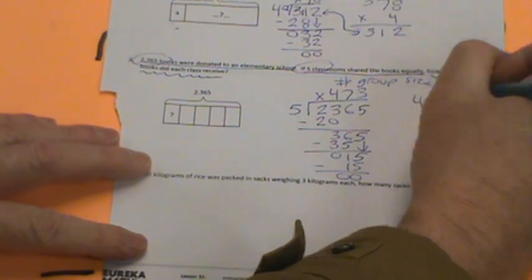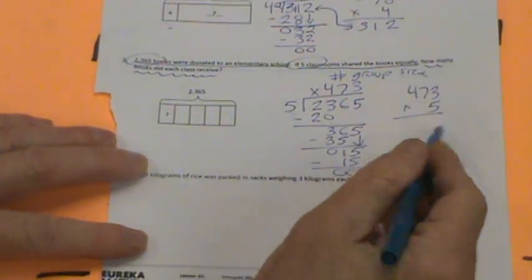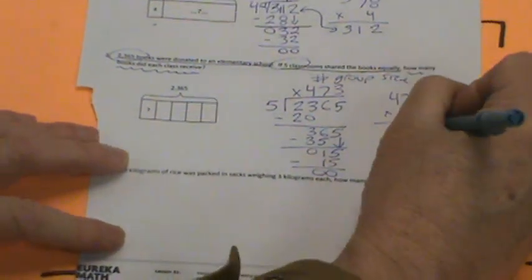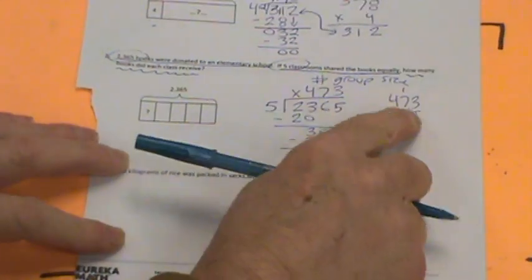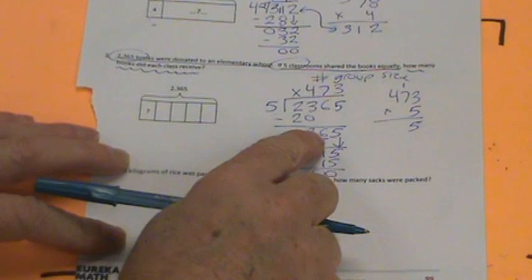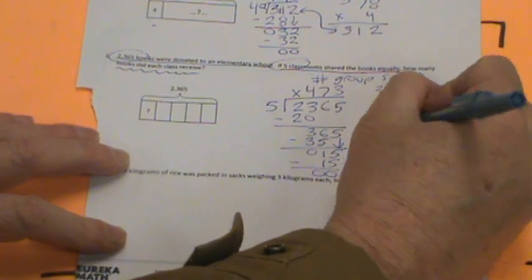Let's check this. We'll do 473 times 5 to check. Look at the magic. 3 times 5, 15. 7 times 5, 35 plus 1 is 36. 4 times 5 is 20 plus the 3 is 23. And we are absolutely correct. Spot on. Let's go to the next one.